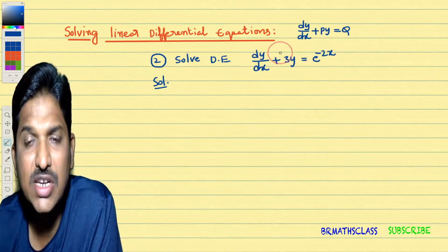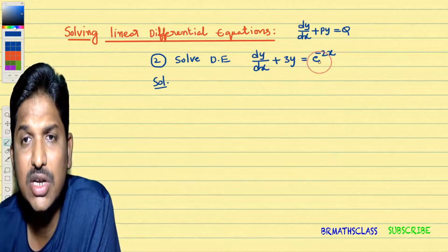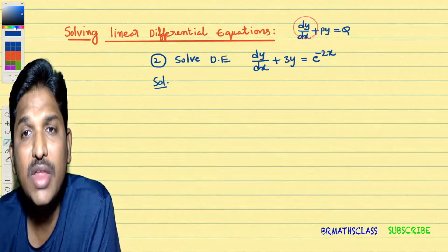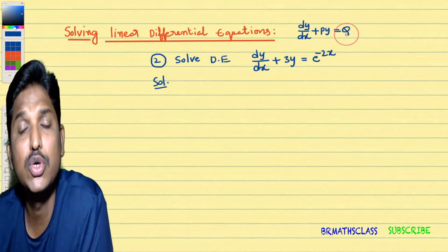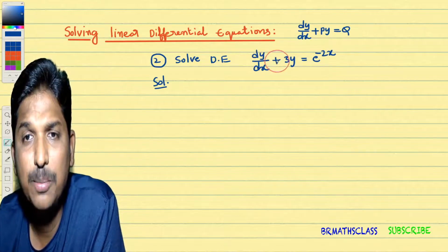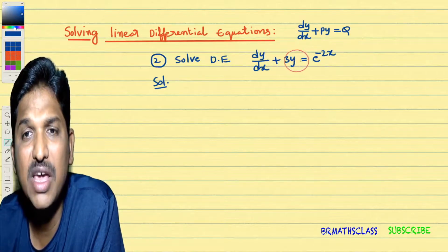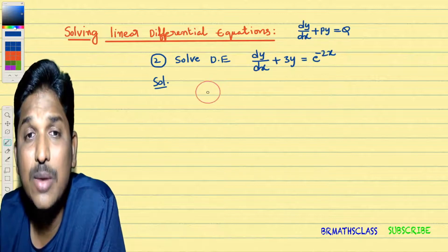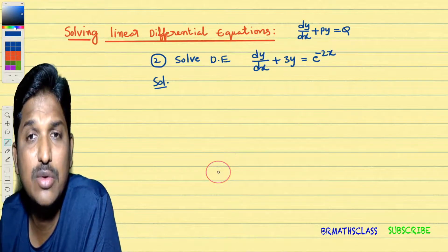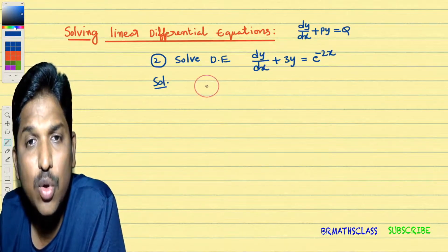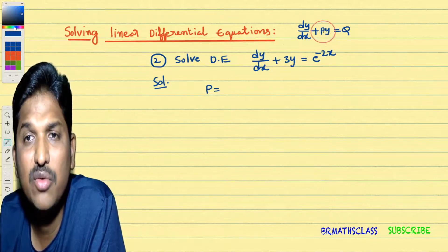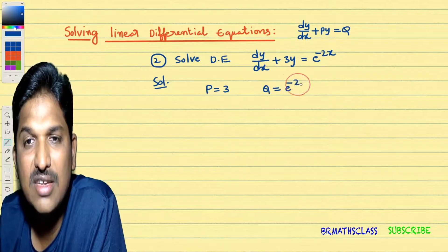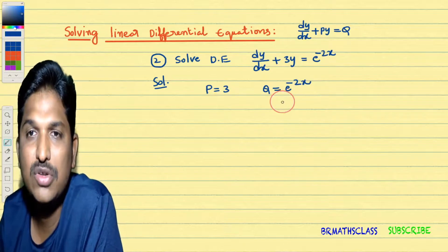How to solve this differential equation? You need to identify that it is a linear differential equation of the form dy by dx plus py equal to q. You can observe dy by dx plus py equal to q, where p is 3 here. We can easily identify the given differential equation is a linear differential equation. Step 1: identifying p and q. Comparing the equations, the y coefficient is p, so p is 3. q is e power minus 2x. We identified p and q, so step 1 is completed.